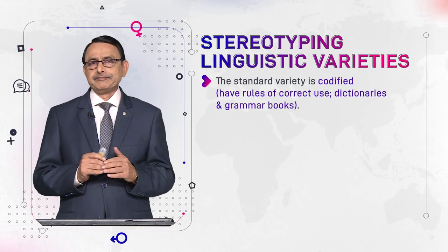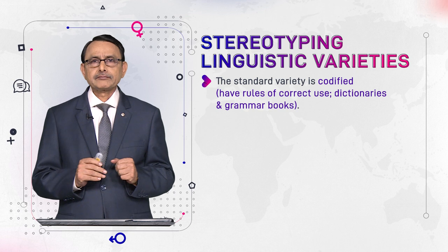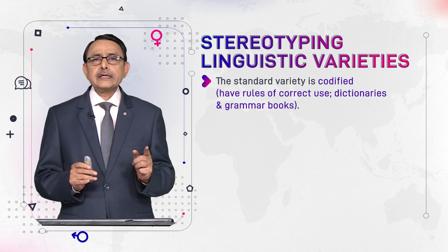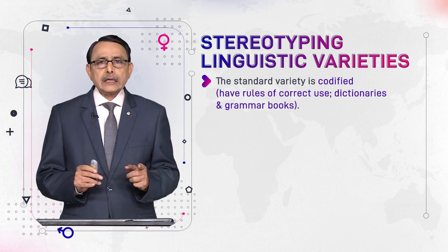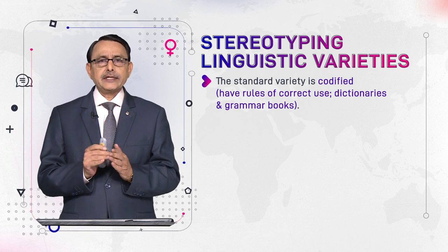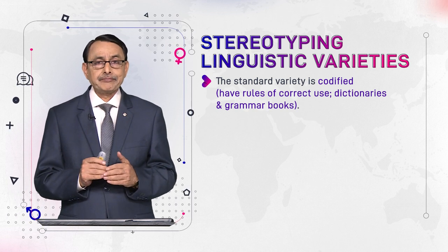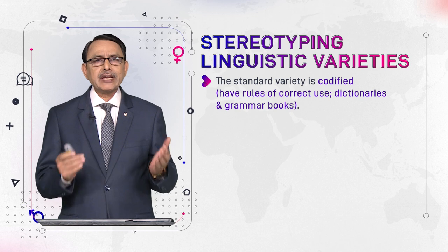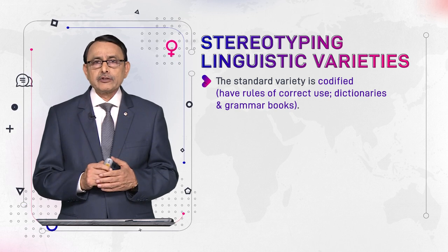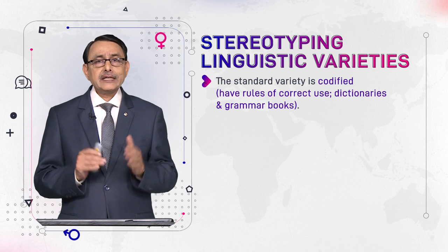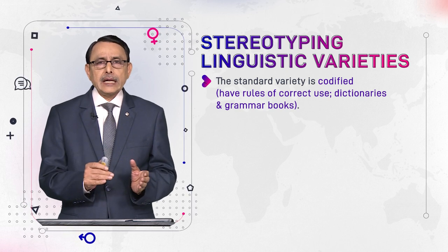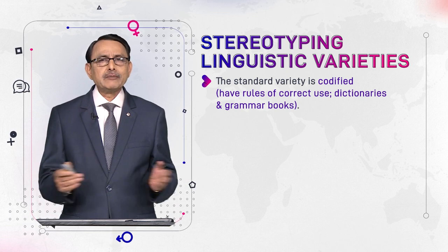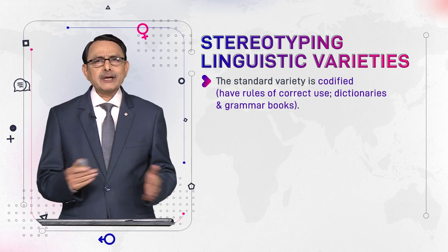The standard variety is codified. The first thing that differentiates it is that the standard variety is codified — meaning its grammar is written, it has literature, and its rules are preserved in style guides and manuals. This is called codification, and the language that is codified is considered superior to a language that is not codified — one that has no grammar, no literature, no established rules.